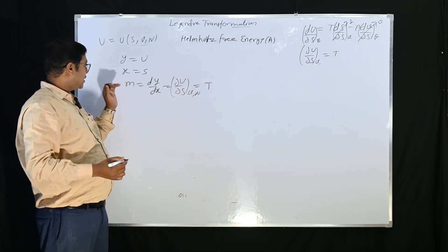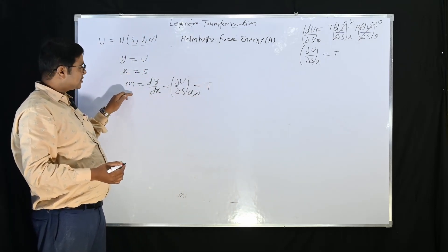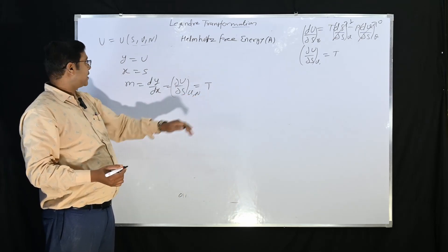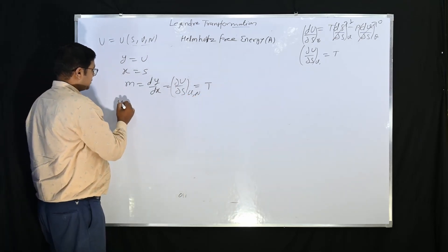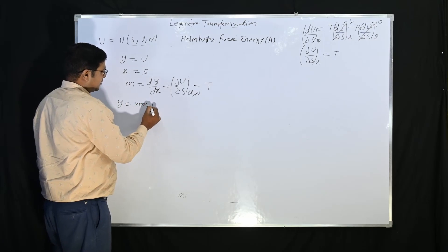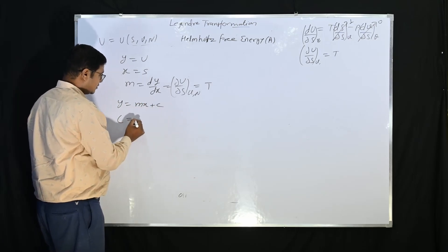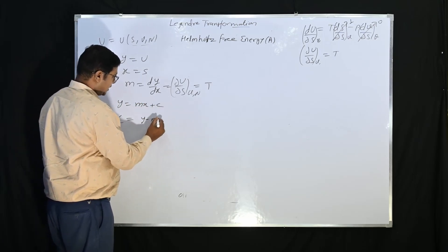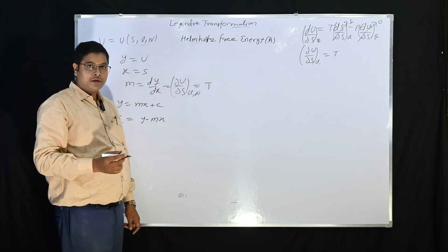So our property variable M is nothing but T. Now we will go to the actual equation Y = MX + C, and our transformation equation is Y minus MX, and we will put the variables.